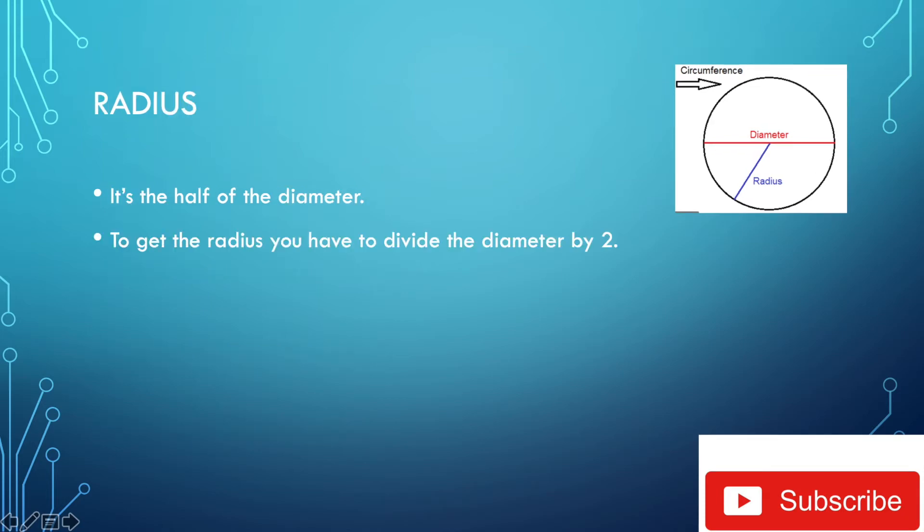Next, we have the radius. It's the half of the diameter. To get the radius, we have to divide the diameter by 2. For example, if the diameter is 30, divided by 2 will be 15. So 15 will be the radius.